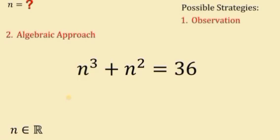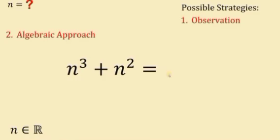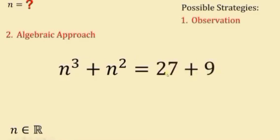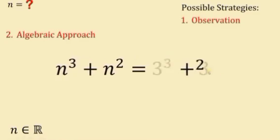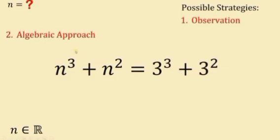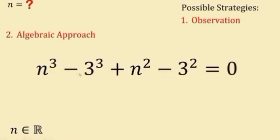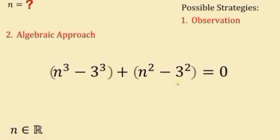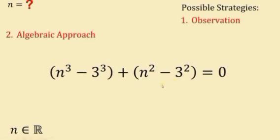Starting with n³ + n² = 36, and knowing that 36 = 27 + 9 = 3³ + 3², we rearrange the terms to get: n³ − 3³ + n² − 3² = 0.